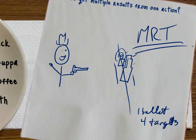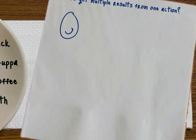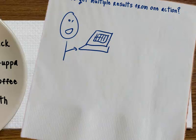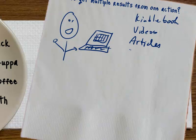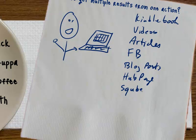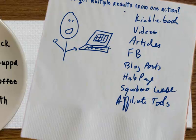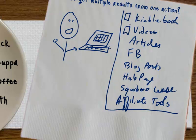What would be an example of this? Well, we take off our cowboy hat and put on our infomarketer, ebook publisher hat. We're trying to get things done and we have this giant list: I need to do a Kindle book, I need to do some videos, some articles, some Facebook posts, some blog posts, I need to build a hub page, a Squidoo lens, and I need to create some affiliate tools. That's a huge list that, if you did linear tasking, could take a really long time.